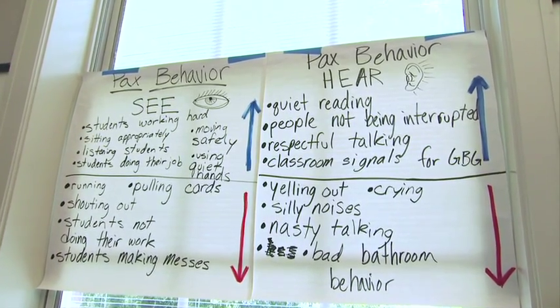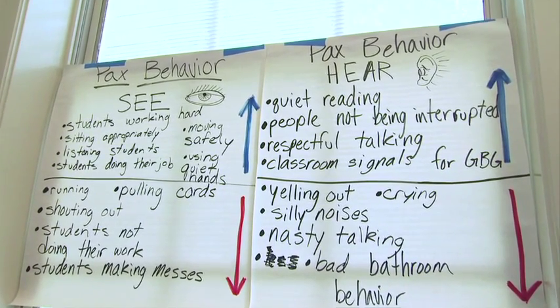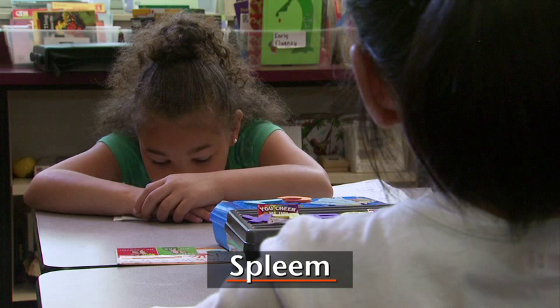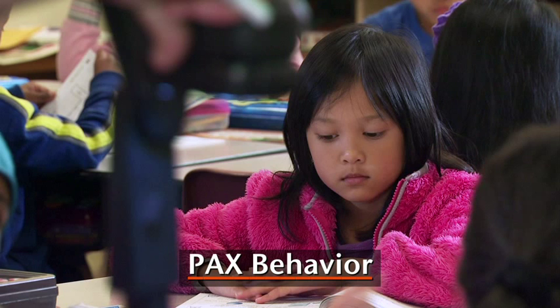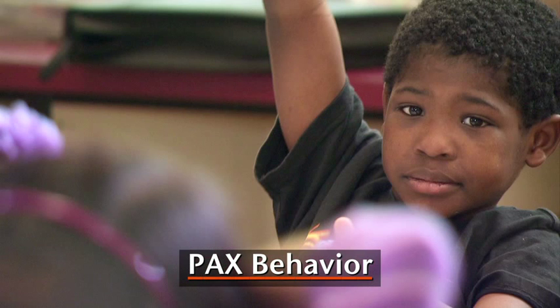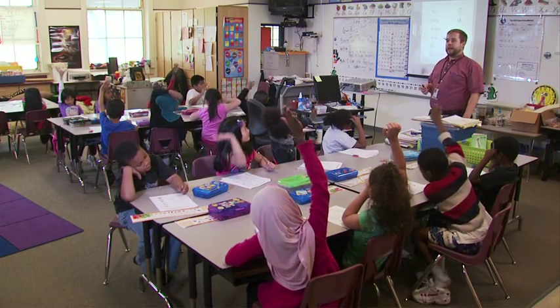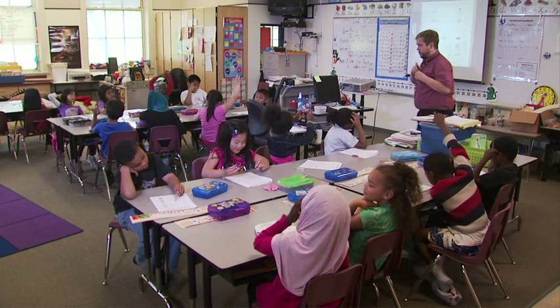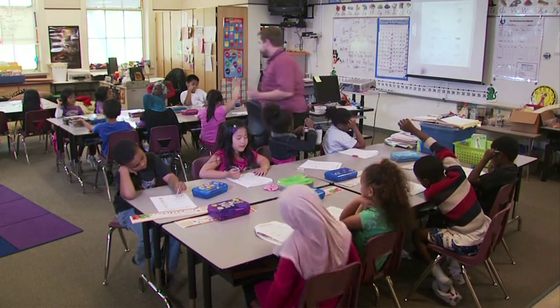To start playing the game, you first create the PACS vision for your classroom — how you want your classroom to look, to feel, and to sound. The students helped decide what they wanted the atmosphere of their classroom to be. Unwanted behaviors are called spleems, while positive behaviors such as staying in your seat or raising your hand are called PACS behaviors. The classroom has been divided into three teams, and the goal of each team is to have the fewest spleems.